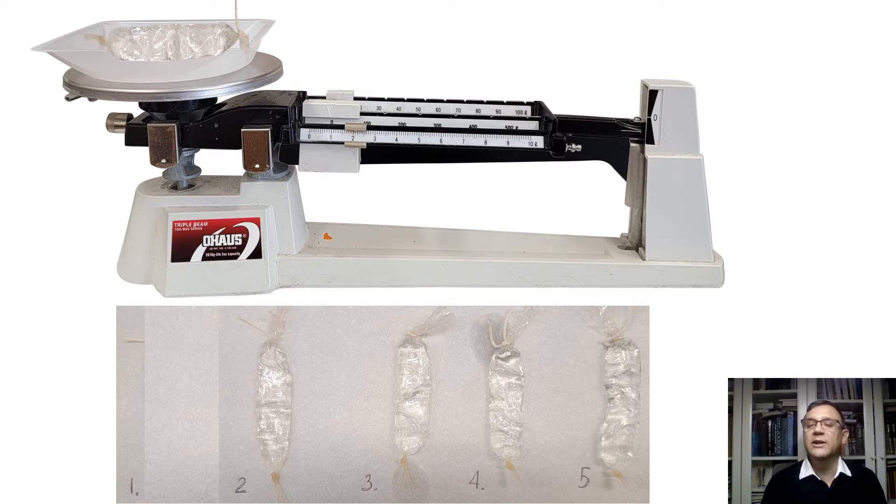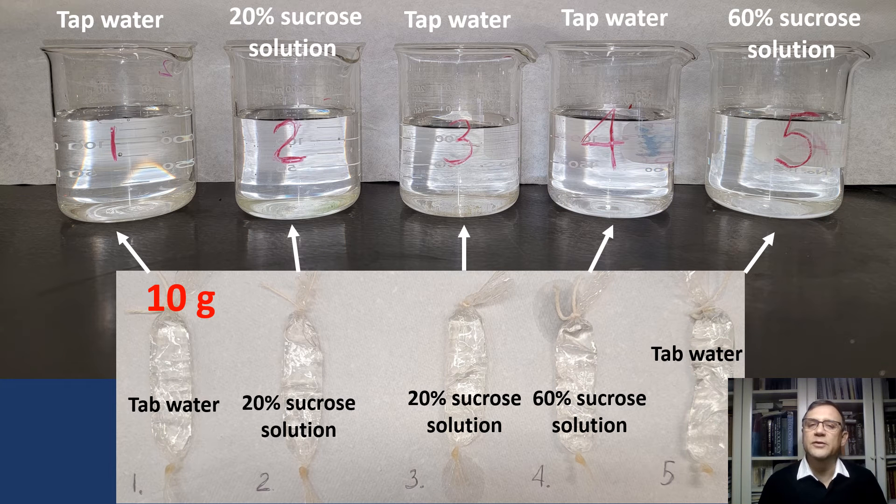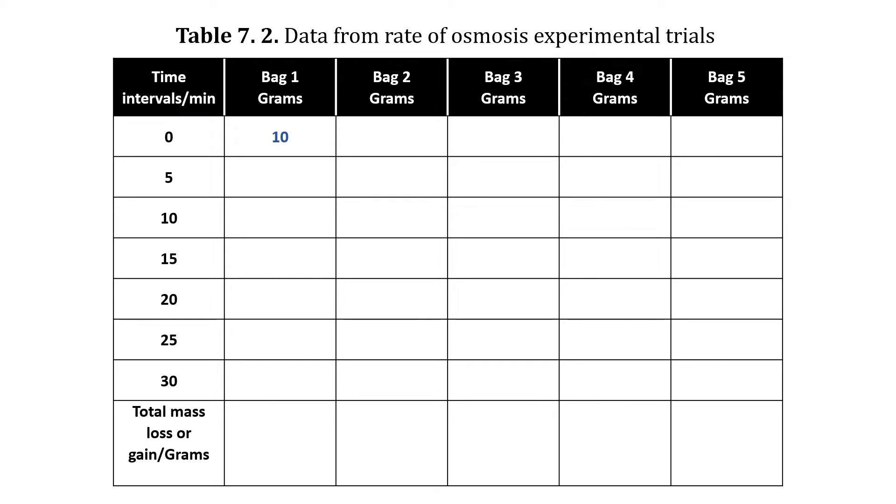Before we submerge our dialysis bags into the beakers, we have to weigh them one by one using laboratory balances. The mass of our first bag is 10 grams. Record this measurement in the data table. This measurement is quite accurate, as one milliliter of water has a mass of approximately one gram.